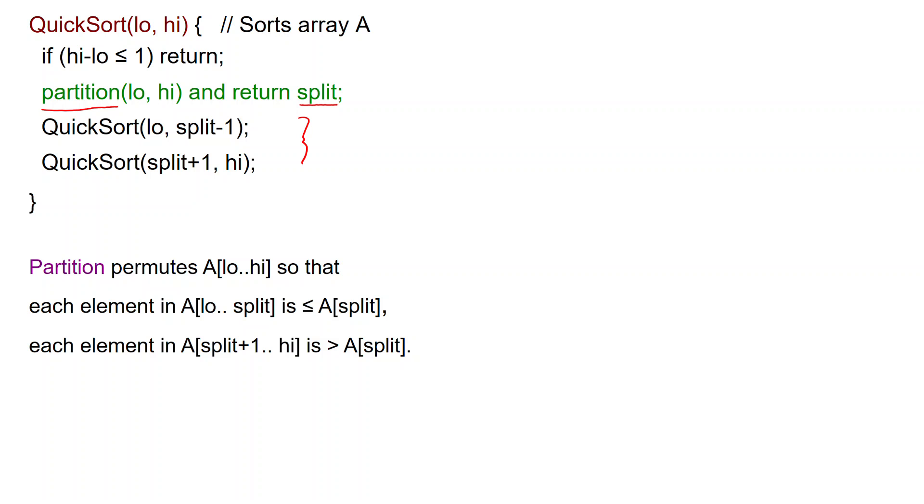More precisely, what partition does is permute the array A from low to high so that the following property holds. Each element in the subarray A from low to split will be at most the element at position split, while each element in position from split plus one to high will be at least the element at position split.